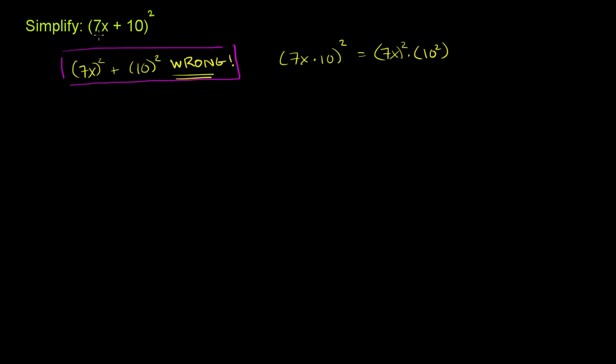you have to just remind yourself that 7x plus 10 squared is the exact same thing as 7x plus 10 times 7x plus 10. That's what it means to square something. You're multiplying it by itself twice here.